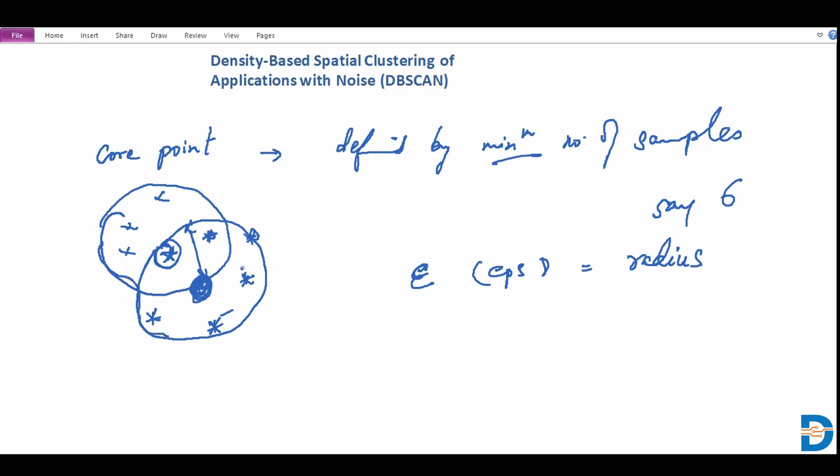In this manner, basically we are extending our clusters or rather extending the same cluster that we had started with to create a larger cluster until eventually we stop at a point where there is a point that doesn't meet the criteria of a core point, which is to say it does not have six observations within that radius of epsilon.